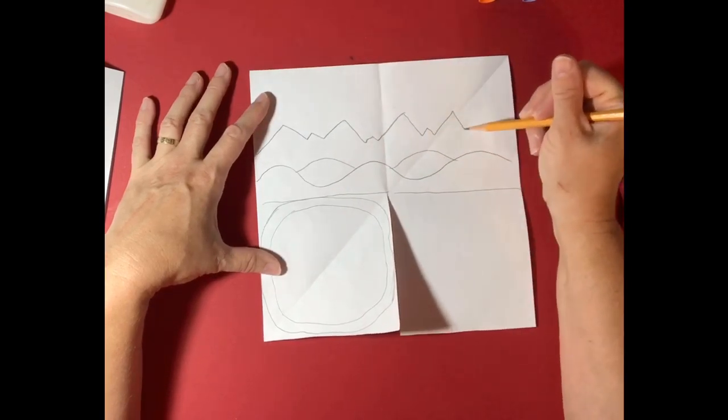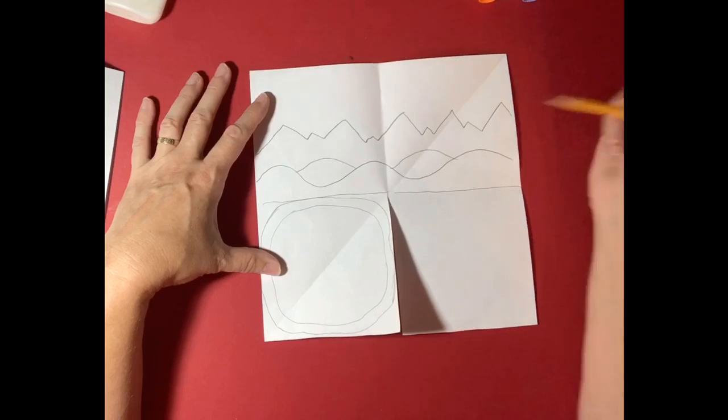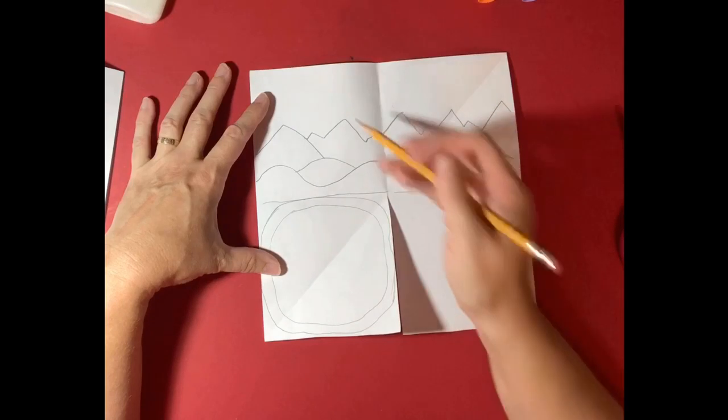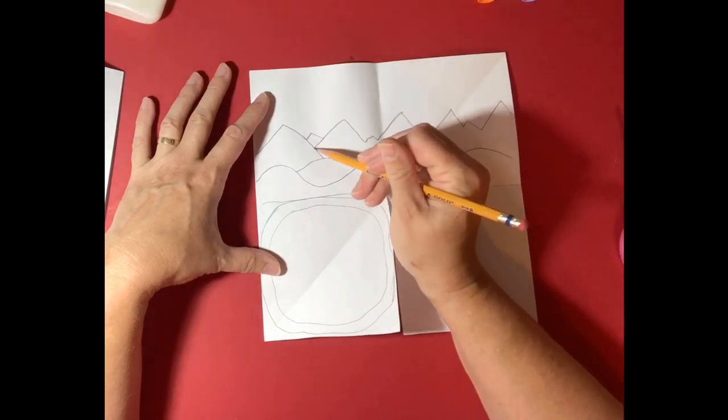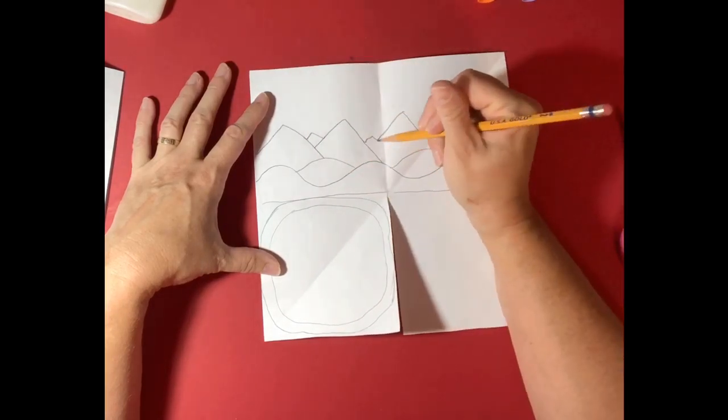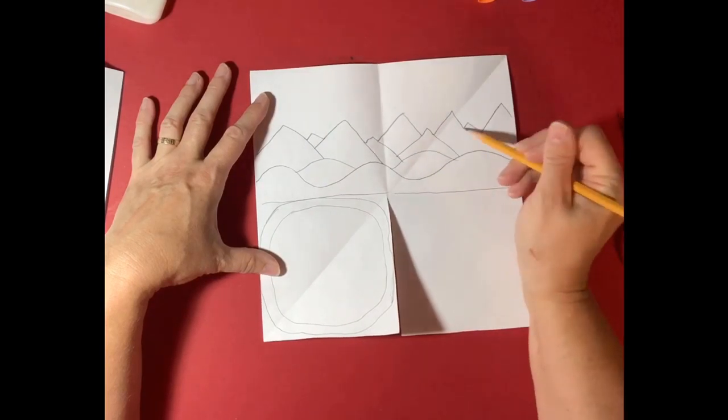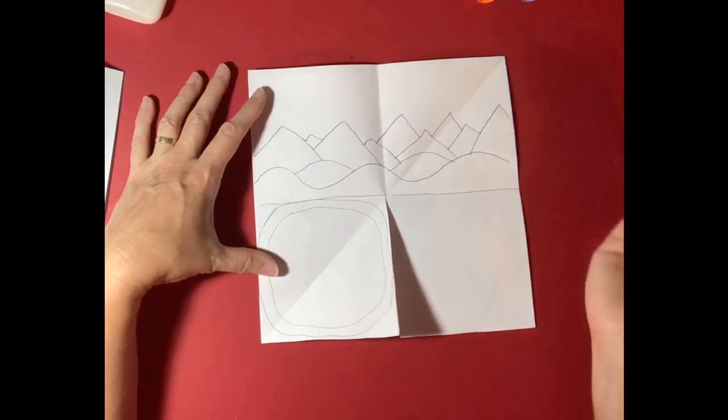And so here I am going to, my little trick for doing mountains is to do a crazy zigzag line and then bring some of these lines down. Keep some of them in front of others. There we go.